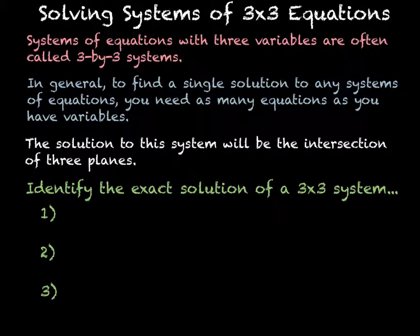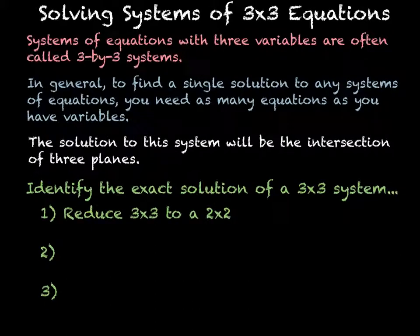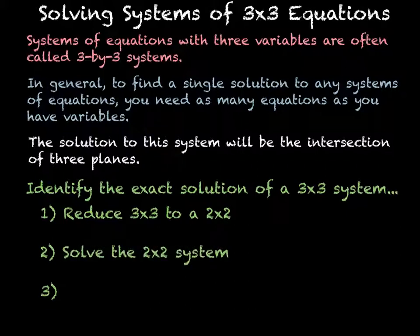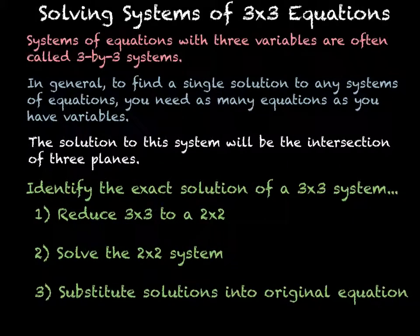To identify the exact solution of a 3x3 system, there are three steps we need to do. Step one is to reduce the 3x3 system to a 2x2 system — we need to eliminate one of the variables completely. Step two is to solve the 2x2 system the same way we did before, either with substitution or with elimination. Step three is to substitute the solutions from the 2x2 system back into one of the original equations, as long as it has all of the variables.